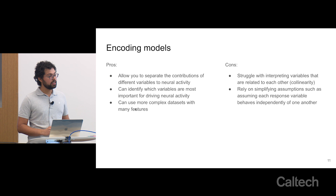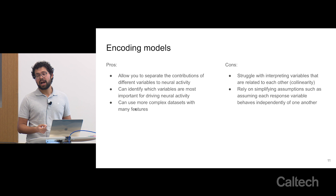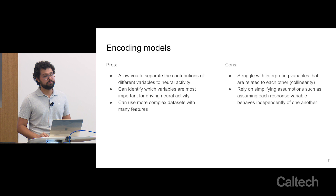The cons of encoding models is that they struggle with interpreting variables that are related to each other — what we call the problem of collinearity. This happens because they rely on simplifying assumptions, such as assuming that each response variable behaves independently. This isn't always true: noise in neural populations varies in correlated fashions across entire populations of neurons, so there are intrinsic properties of how neurons behave that mean they aren't truly independent. When building these models, we have to make that assumption, so it's always something to keep in consideration.